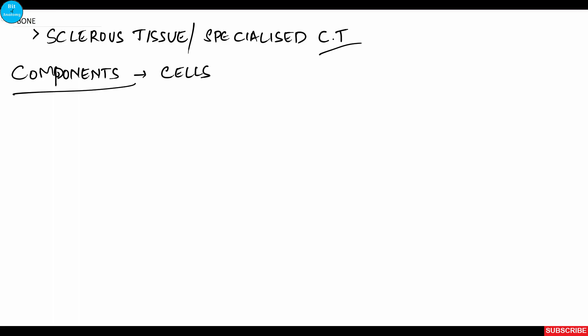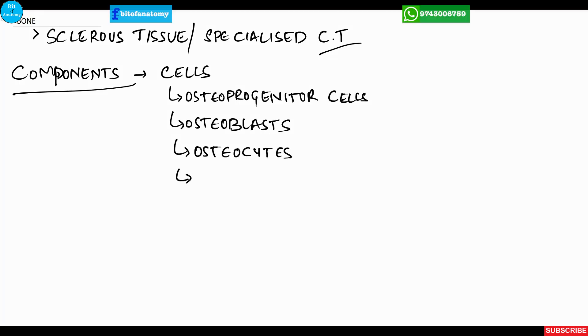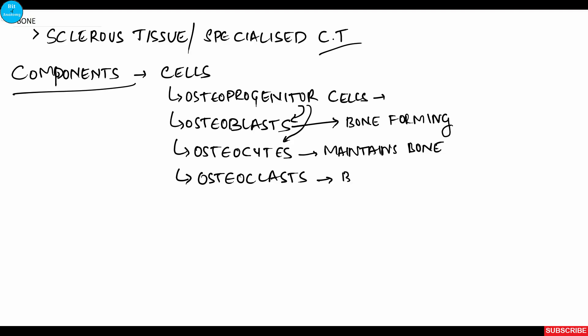If you see the components, it contains various types of cells like osteoprogenitor cell, osteoblast cell, osteocyte cell and osteoclasts. Osteoprogenitor cell is a stem cell which forms osteoblast and osteocyte. Osteoblast is bone forming cell, osteocyte is bone maintaining cell and osteoclast is bone removing or bone resorption cell.